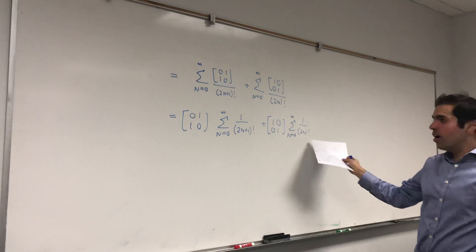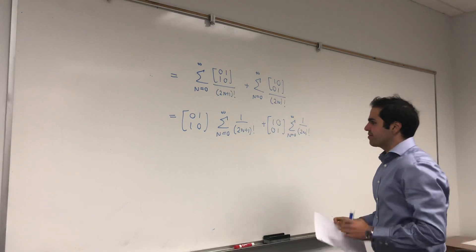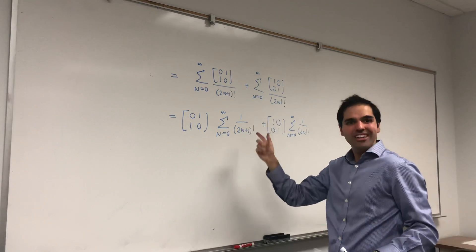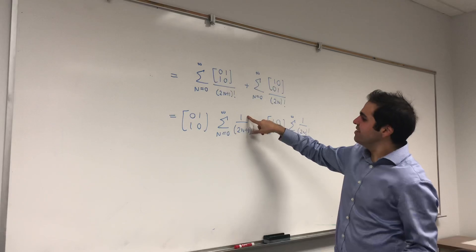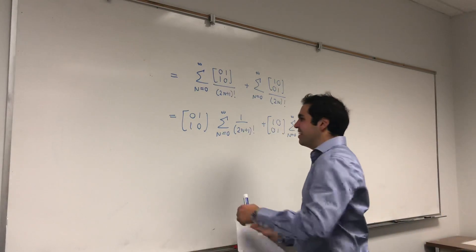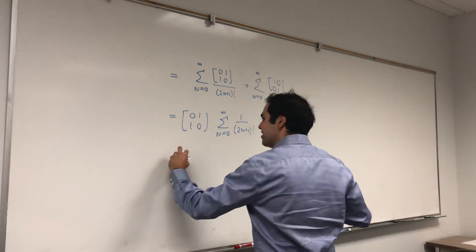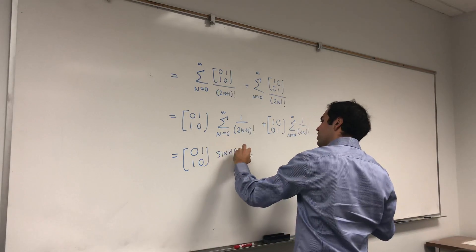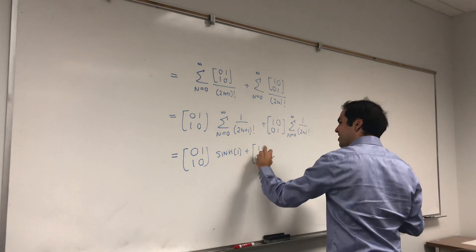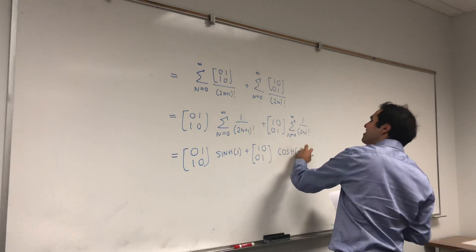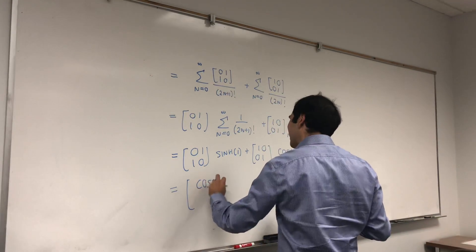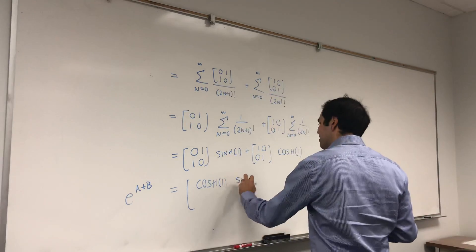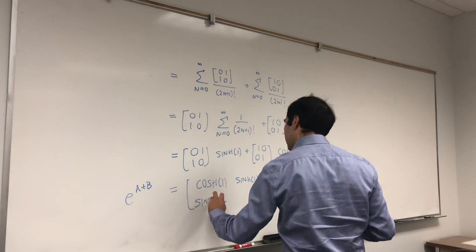Now the question is, what are those two scalar sums? This looks almost like sine, except for sine we need a (-1)^n factor. Because it almost looks like sine, it's actually sinh. If you look at the power series for sinh and cosh, you get that the first sum is sinh(1) and the other is cosh(1). So e to the A+B equals [[cosh(1), sinh(1)],[sinh(1), cosh(1)]].